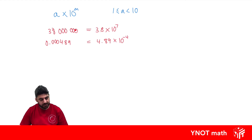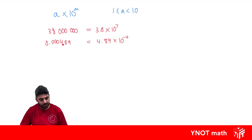For big numbers our power ends up being positive, and for small numbers it ends up being negative. To write in scientific notation, all we have to do is put a decimal place after the first non-zero digit. So here the first non-zero digit is 3, we put the decimal after the 3. Over here our first non-zero is 4, so we put the decimal after the 4. Then we times by 10 and put the corresponding power, which moves the decimal to after the first non-zero digit.